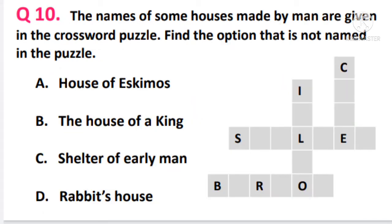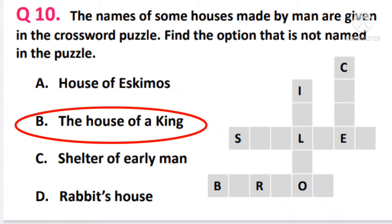Question 10. The names of some houses made by man are given in the crossword puzzle. Find the option that is not named in the puzzle. The answer is option B — the house of a king, which is generally called a castle or palace. There is no such word in the puzzle. However, igloo, caves, burrows, and the middle word shelter are all given there.